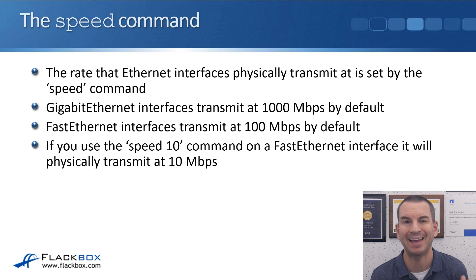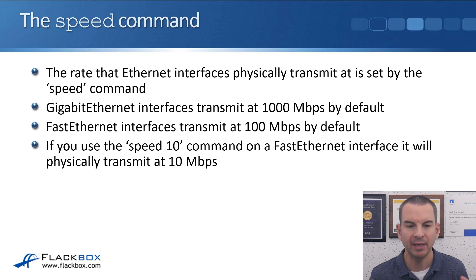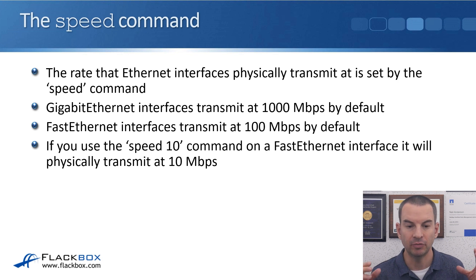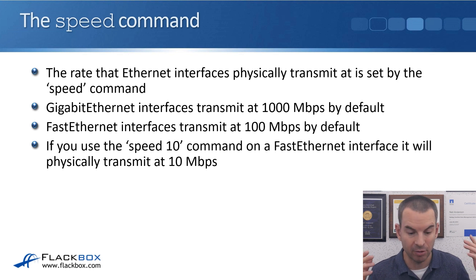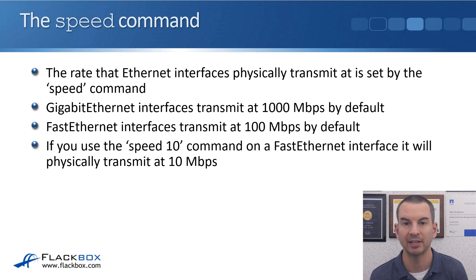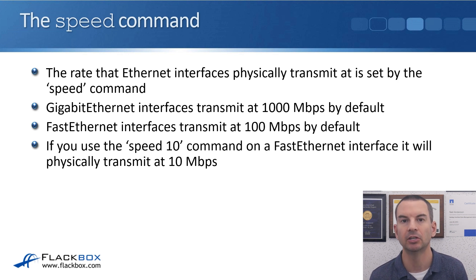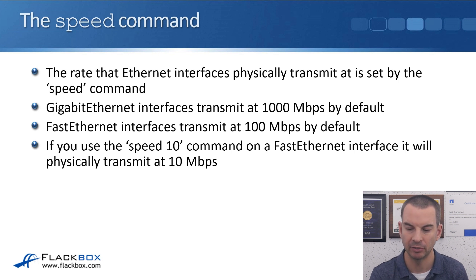For example, if you use the speed 10 command on a fast Ethernet interface and it supports it, it will physically transmit at 10 megabits per second instead. If you do that, you need to make sure that you manually set the speed on both sides of the link, or you're going to have problems. It changes the actual physical speed of the interface from 100 megabits per second to 10 megabits per second. So on Ethernet interfaces, it's the speed command that you use to change the default physical speed.